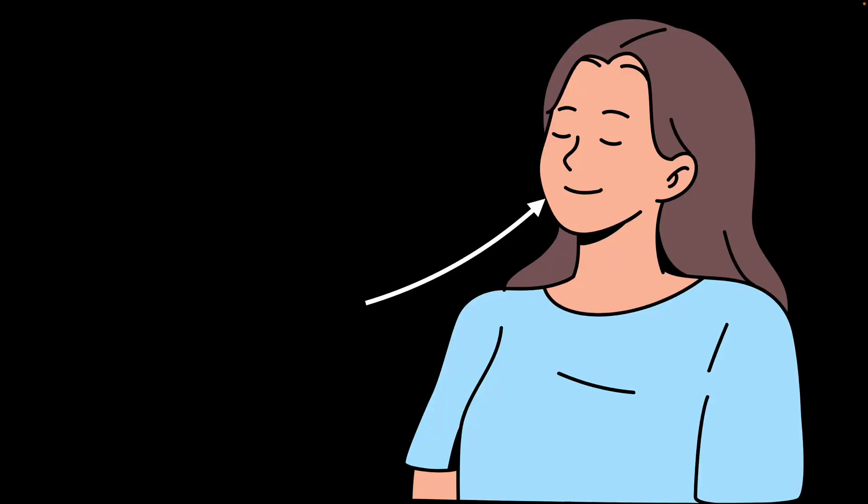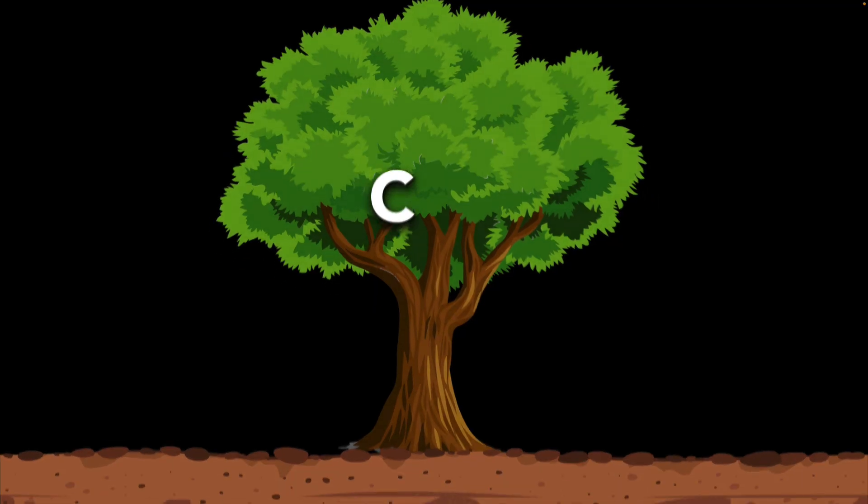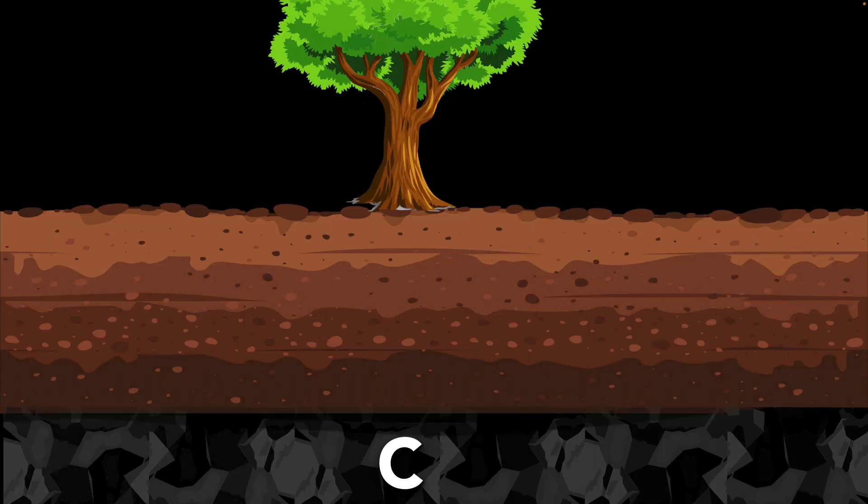Take a deep breath in and out. The carbon dioxide you just exhaled might end up in a tree. A few years later, it could settle in soil. And millions of years from now, it might even become coal. But wait, how does carbon move through all these places? Let's find out.